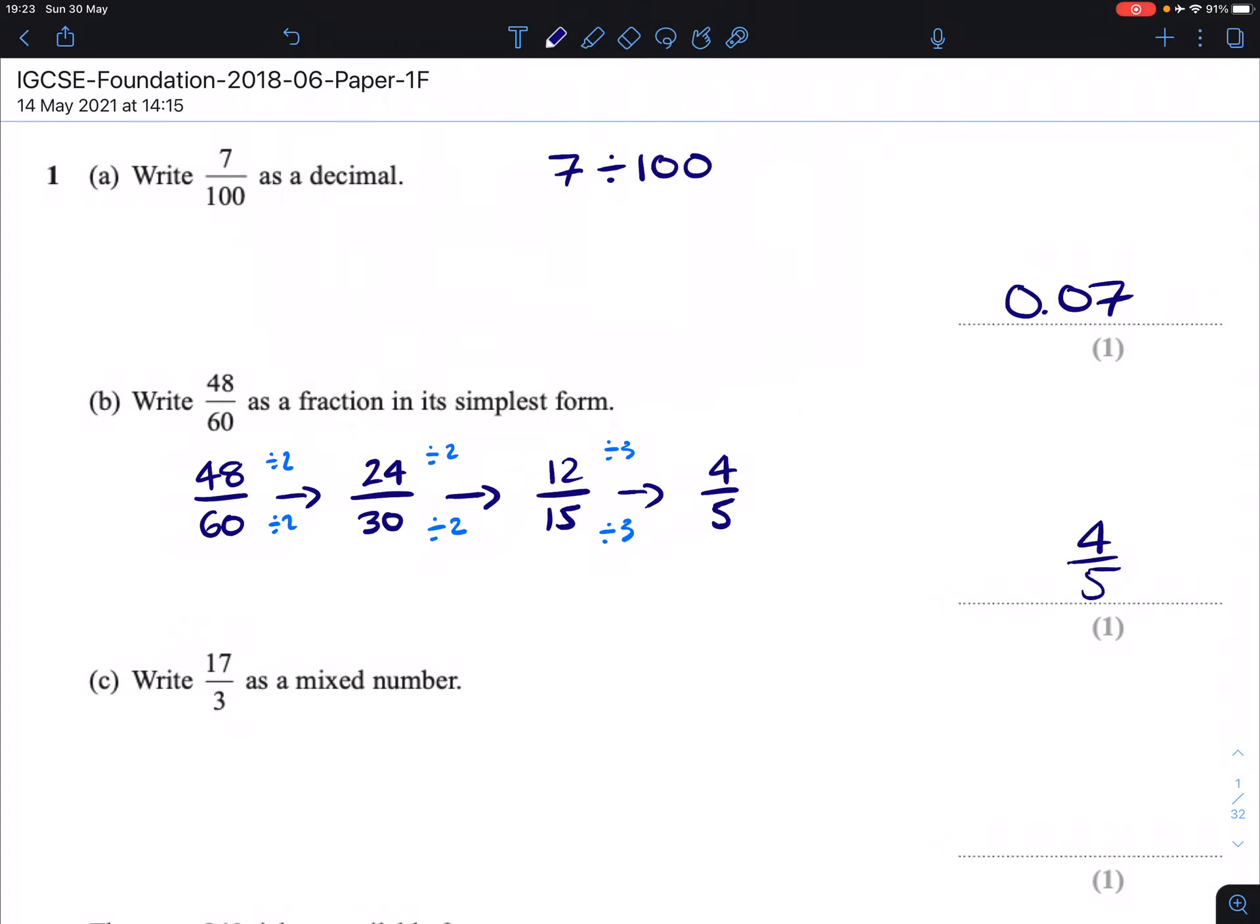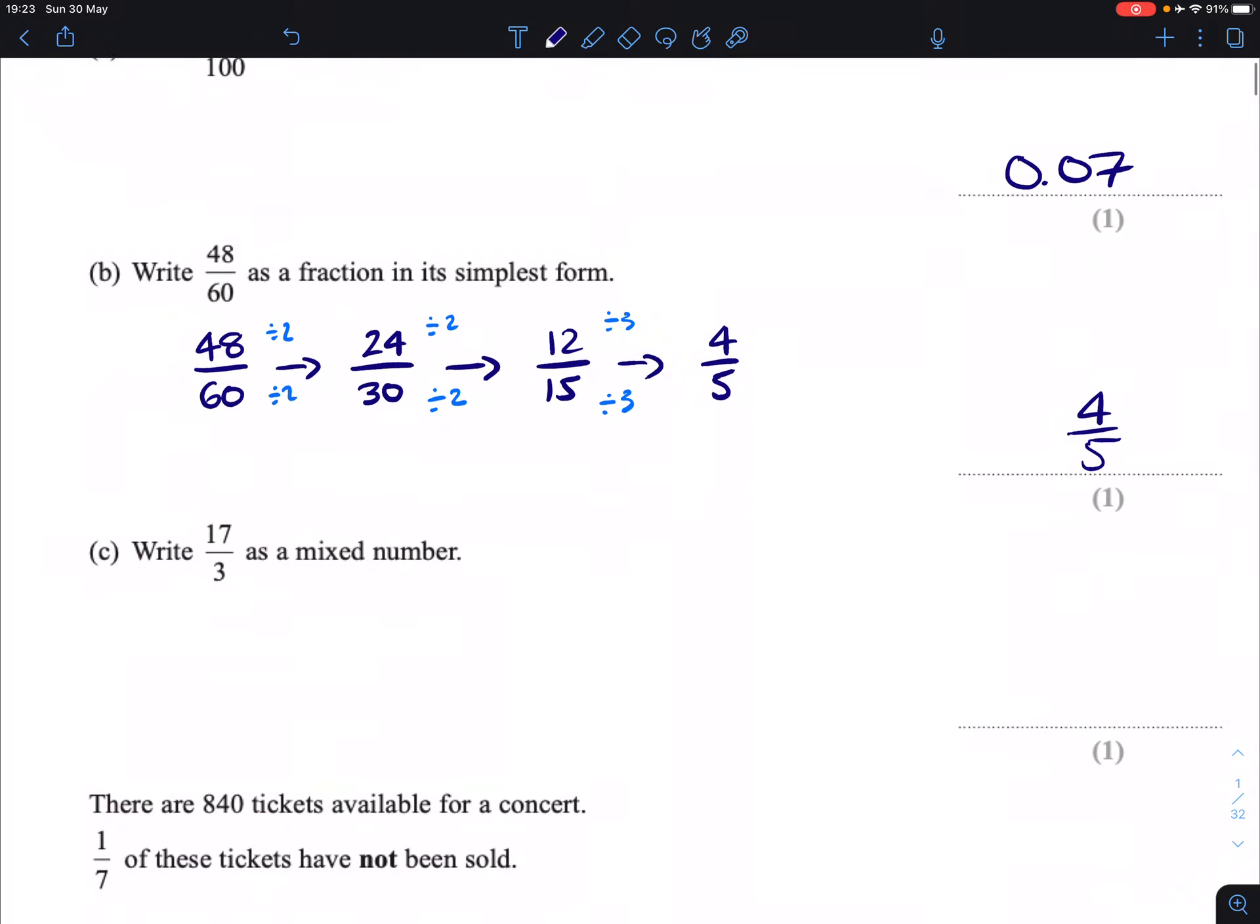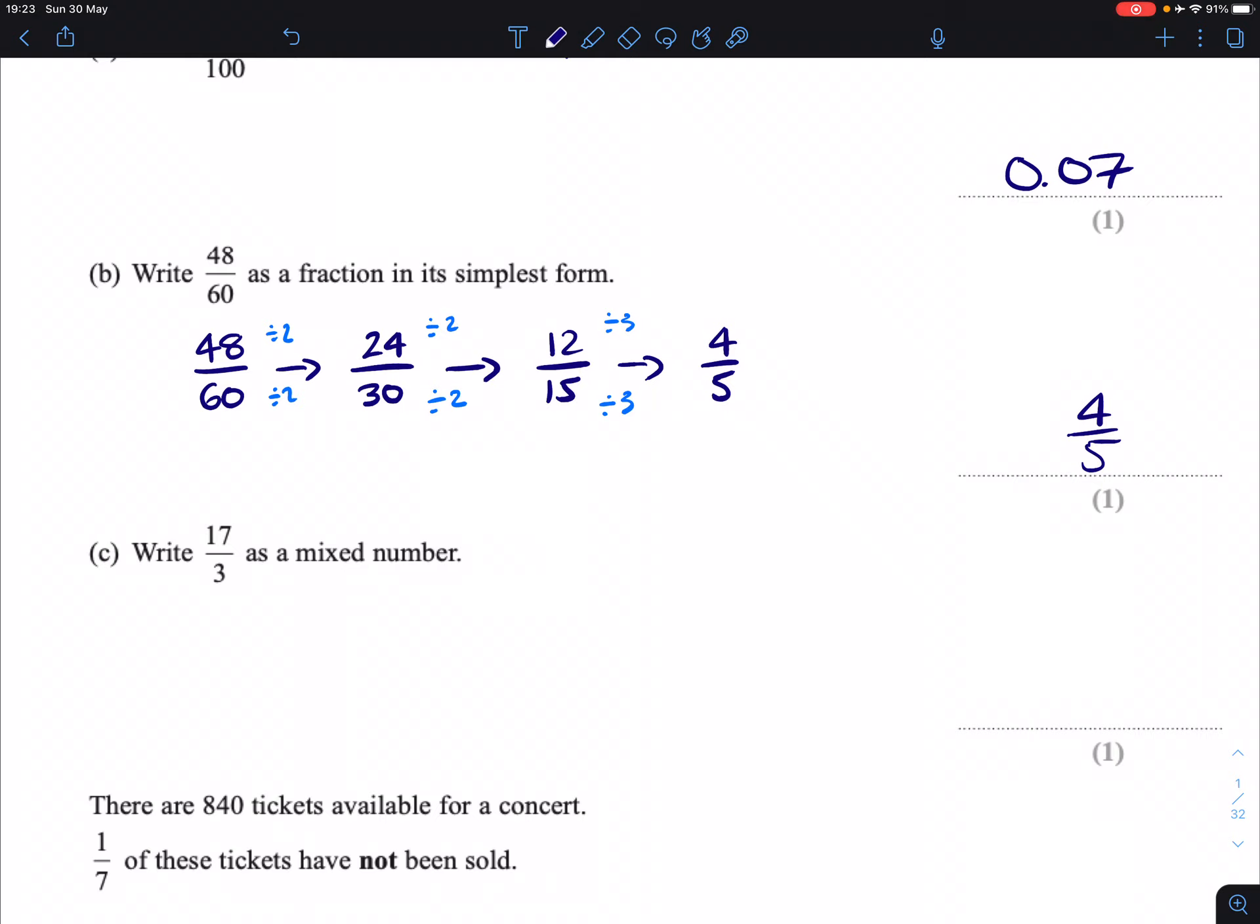Part C. Write 17 thirds as a mixed number. So whenever you are converting an improper fraction into a mixed number, one of the ways you can do it is to actually do 17 divided by 3 in your calculator. What you will get from that is 5.6 recurring. So what that tells you is you're going to have 5 wholes.